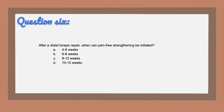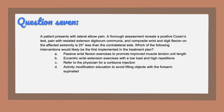Question six, the answer is C, 8 to 12 weeks. This is dependent on the surgeon, but in general 8 to 12 weeks is recommended for strengthening in a pain-free range. Question seven, the answer is A. The information in the question suggests lateral epicondylitis, so the most appropriate first intervention is wrist flexion stretching. Answer D was a tricky one — it says avoid lifting objects with supination, and supination is actually the safer way to lift, so that answer is incorrect.